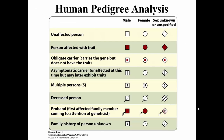Whenever you talk about human pedigree analysis, there are symbols you want to know. Typically males are indicated by a square, females by a circle. If the sex is not known or not specified, it's indicated by a diamond. If a person is not affected by a disorder or mutation, they'll have an open symbol. If they are affected, we shade that symbol in. If a person is a carrier, it's indicated by putting a dot in the symbol. If they're a carrier that doesn't express symptoms but may express it later, a vertical line will be placed through the symbol. These are all symbols you want to know when looking at a pedigree.